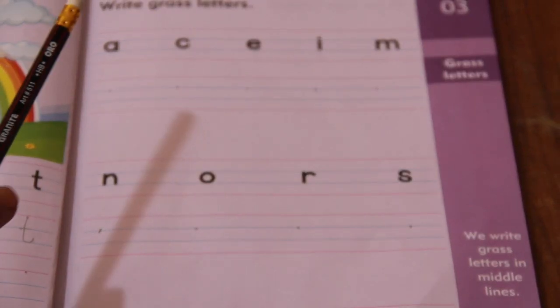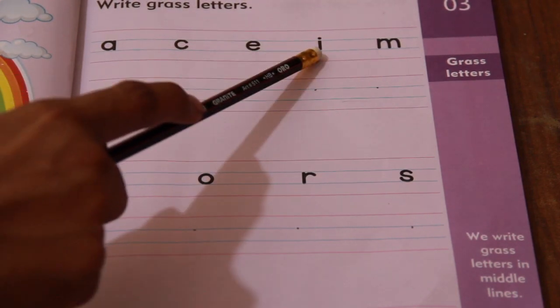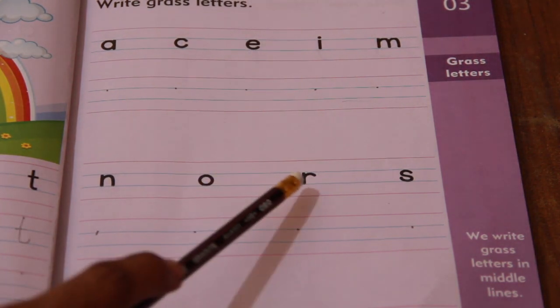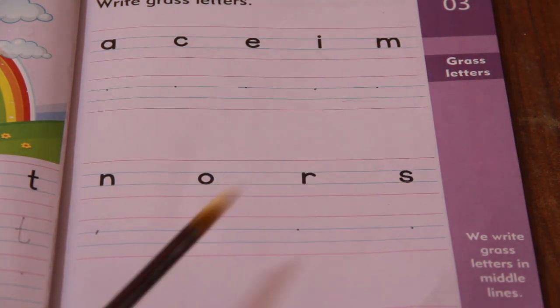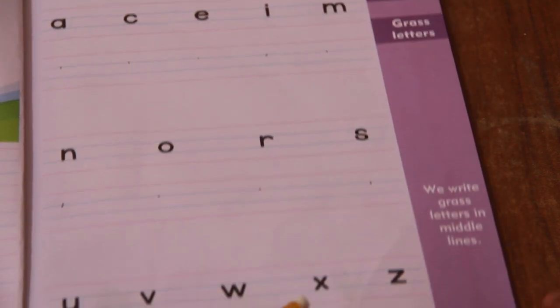Grass letters are A, C, E, I, M, N, O, R, S, U, V, W, X, Z.